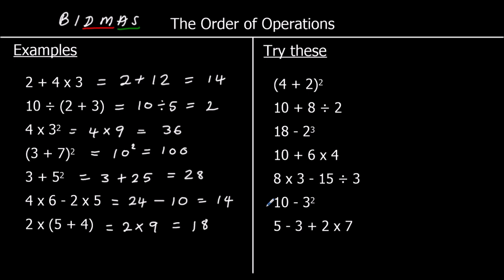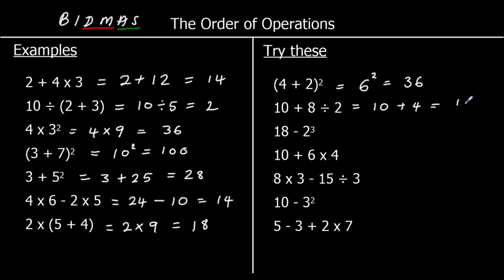Pause the video and have a go at these. OK, the first one: we've got brackets, so we'll do that first. 4 plus 2 is 6, so we've got 6 squared, which is 36. The second one: no brackets, no indices, we do have division, so we'll do that first. It's 8 divided by 2, which is 4. So 10 plus 4 is 14.